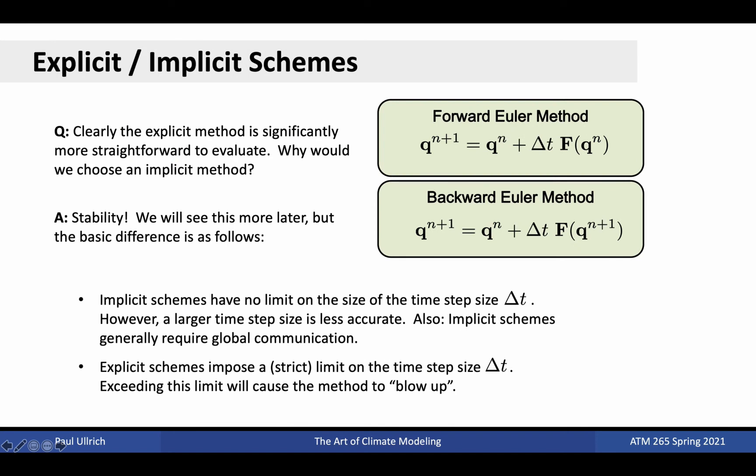We thus have the forward Euler method, which is an example of an explicit scheme, and the backward Euler method, which is an example of an implicit scheme. In general, methods are referred to as explicit methods if the right-hand side is evaluated only using known information. If the right-hand side is evaluated using unknown information, then they are implicit methods, requiring the solution of an implicit equation. Given that implicit methods are clearly substantially more complex than explicit methods, we could ask why we would even consider them.